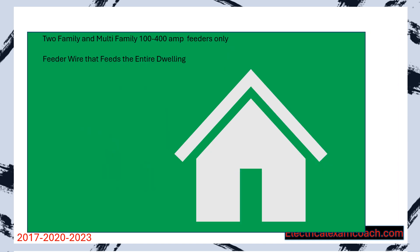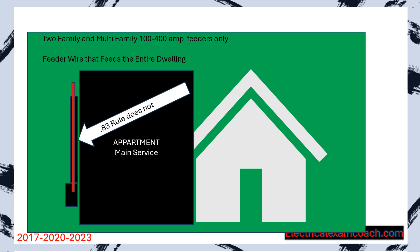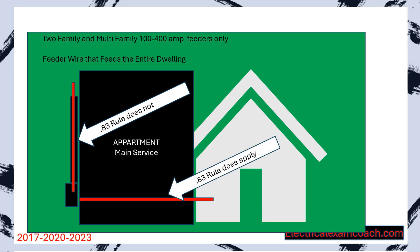For two-family and multi-family dwellings, this applies to feeders only between 1 and 400 amps, and the feeder must feed the entire dwelling. For an apartment attached to a larger structure where the main service is located, the 83% rule does not apply to the main service wire — you use previous rules for that. But the individual feeder going into that individual unit does qualify. This allows you to use a smaller wire based off the table, which can save money over time.